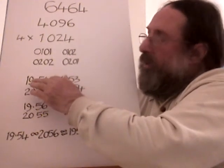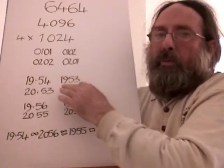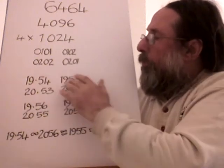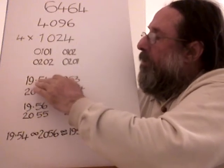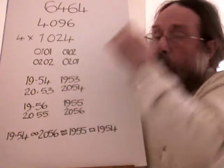We consider the pairs 19 and 20 and 53 and 54. So you've got four possibilities again. 19, 54, 1953, 20, 53, 20, 54.